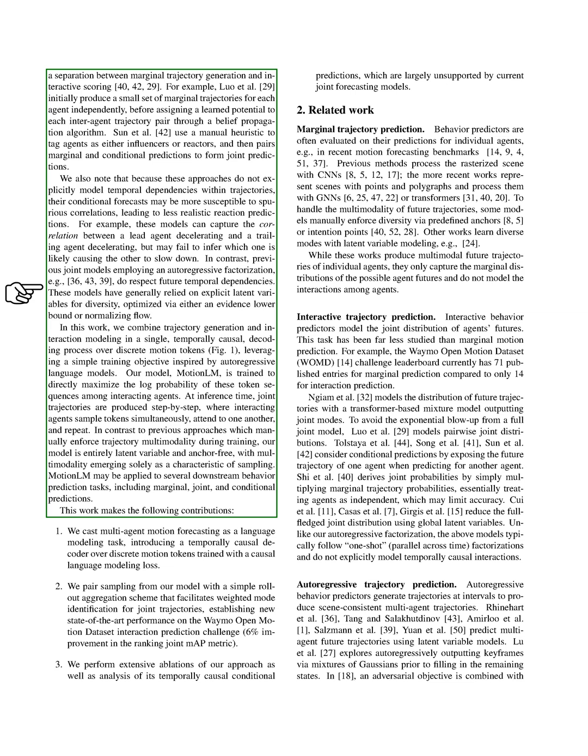In contrast, previous joint models that use an autoregressive factorization do respect future temporal dependencies. These models typically rely on explicit latent variables for diversity, optimized through an evidence lower bound or normalizing flow. In our work, we propose a model, MotionLM, that combines trajectory generation and interaction modeling in a single, temporally causal, decoding process over discrete motion tokens.